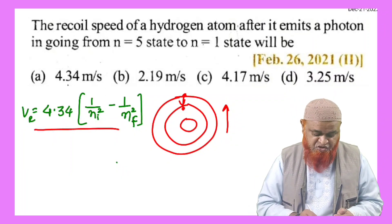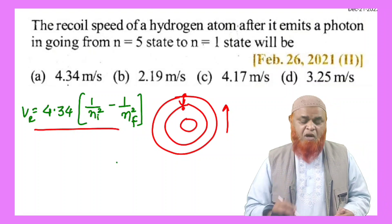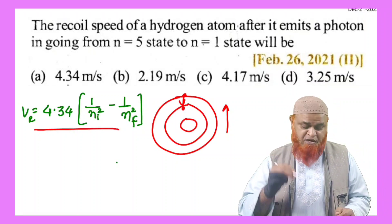So for that there is a shortcut formula. What is that shortcut formula? I am sharing this formula here: recoil velocity is nothing but 4.34 into 1 by n initial whole square minus 1 by n final whole square.